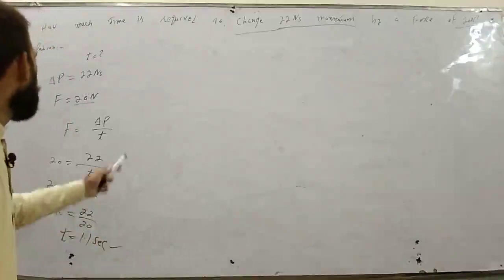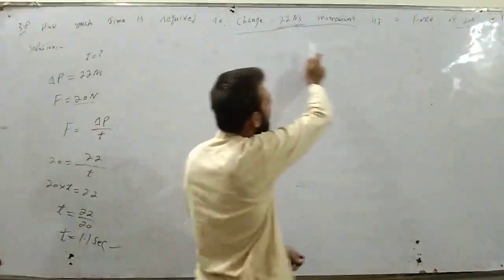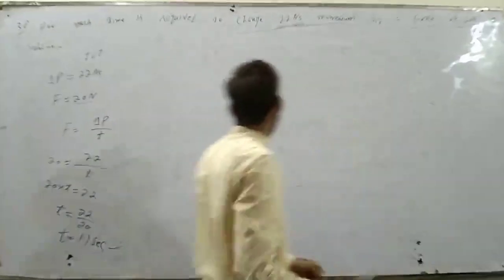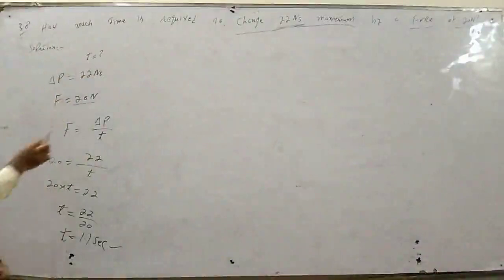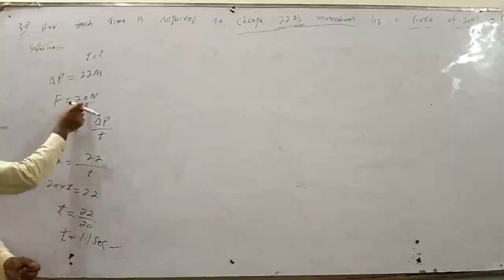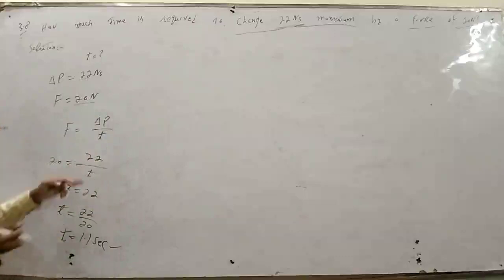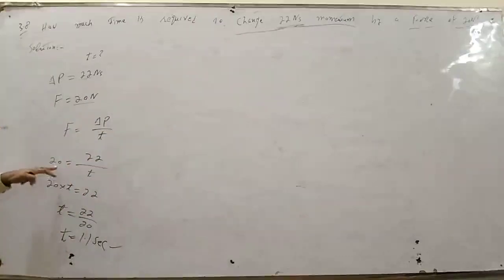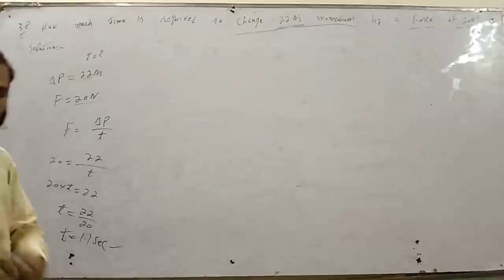अब next करते हैं 3.9। इसमें दिया हुआ था: change in momentum 22, साथ force 20 newton। Find time करना था। हमने relation use किया - force और momentum का: F is equal to del P over T। 20 = 22/T। T = 22/20 = 1.1। यह बिल्कुल correct है।